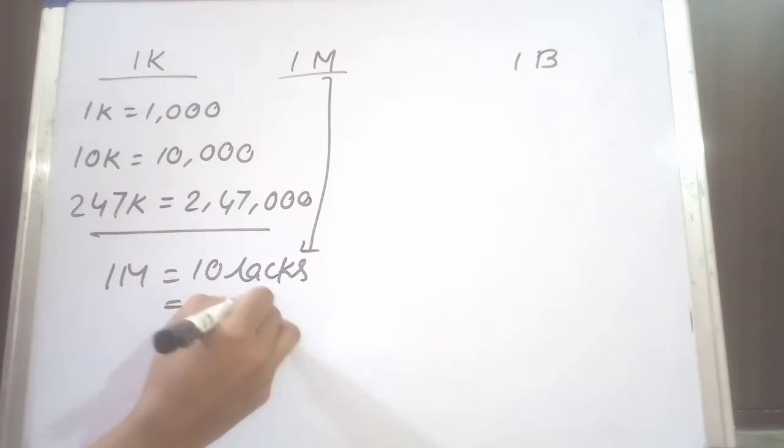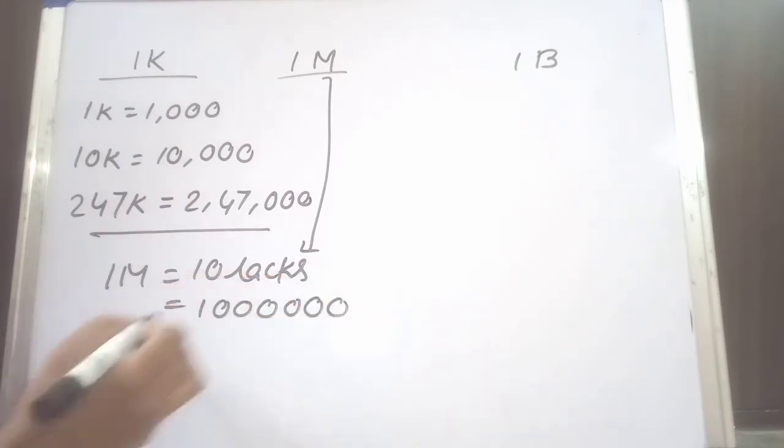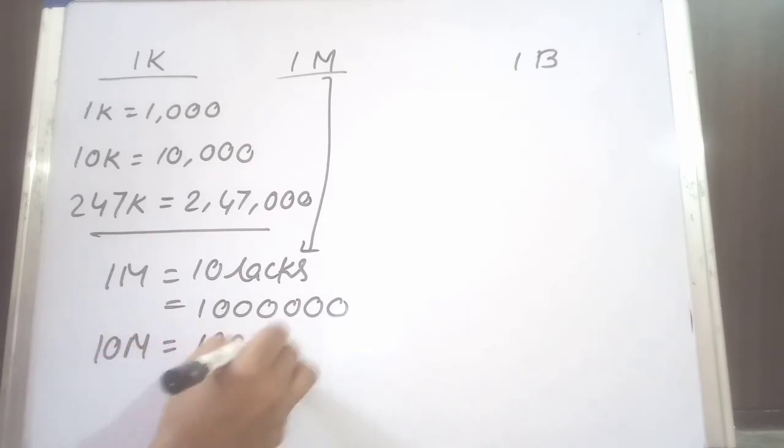That means 1 followed by 6 zeros: 1, 2, 3, 4, 5, 6. Now 10 million. 10 million means 100 lakhs.